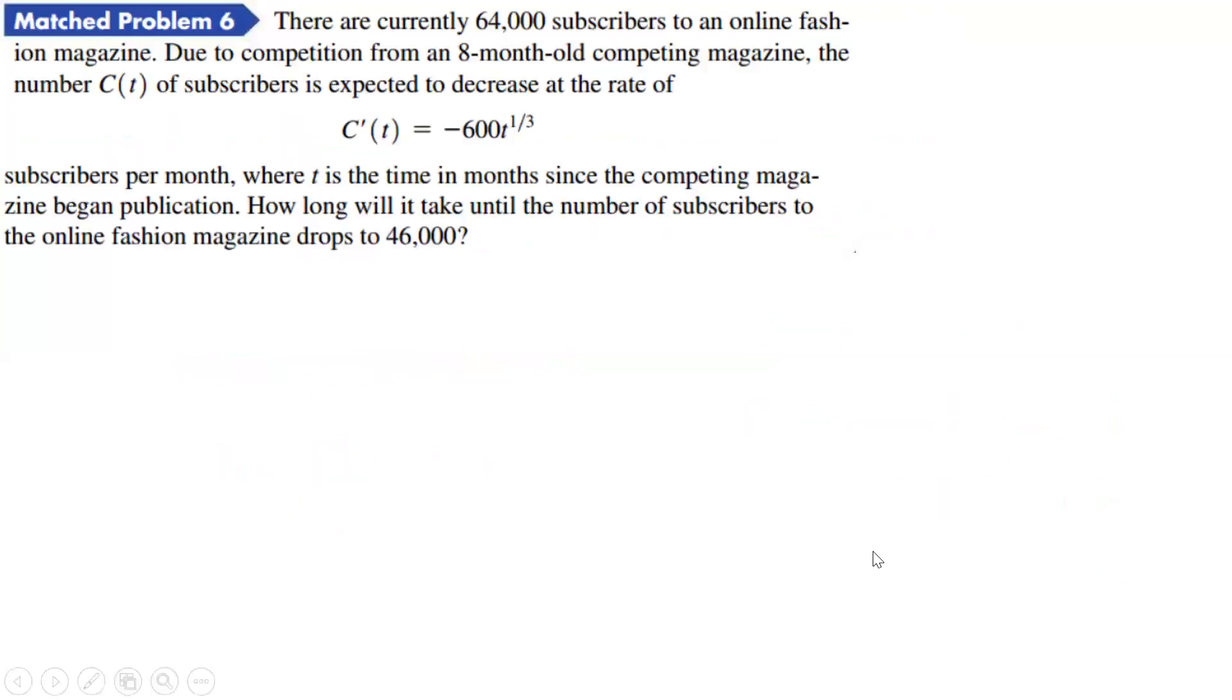Let's do one more. This one says there are currently 64,000 subscribers to an online fashion magazine. Due to the competition from an eight-month-old competing magazine, this number c of t of subscribers is expected to decrease at the rate of c prime of t equals negative 600t to the one-third subscribers per month, where t is the time and month since the competing magazine began publication. How long will it take until the number of subscribers of the online fashion magazine drops to 46,000?